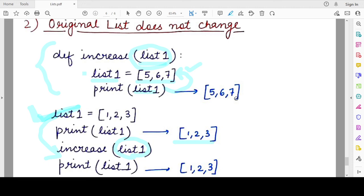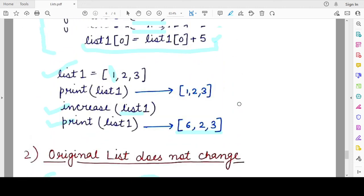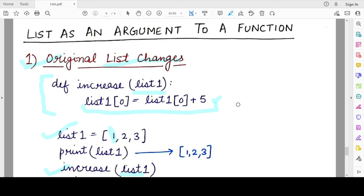The list remains unchanged. These are the two scenarios that can be possible when passing the list as an argument to a function. I hope you understand both the concepts.